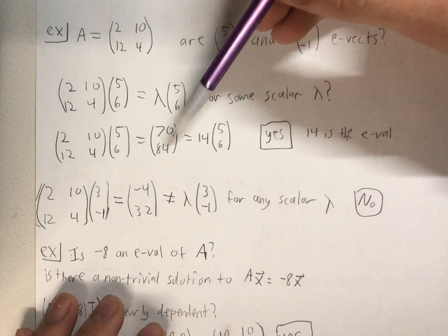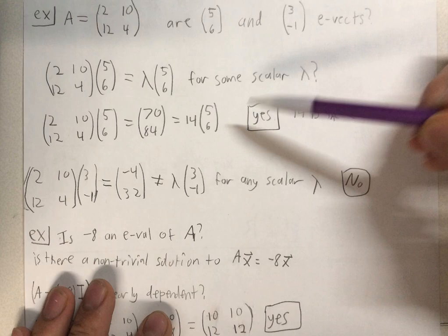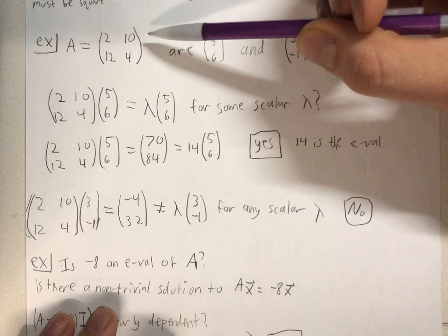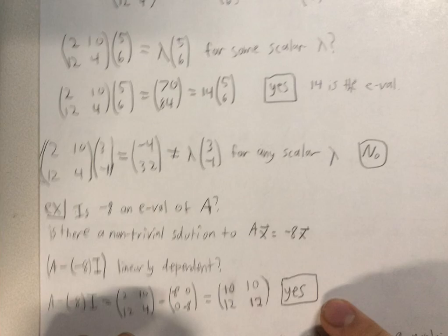So 2, 10, 12, 4 times 5, 6, multiply it out, we get 70, 84, which is 14 times the vector 5, 6. So yes, 5, 6 is an eigenvector of this matrix. And 14 would be the associated eigenvalue.